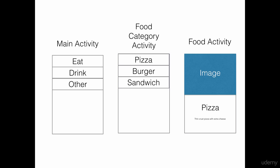When we click on the eat option, we will be redirected to a new activity which is also going to be a list activity called the food category activity. The food category activity is going to have three items: pizza, burger, and sandwich. When we click on either of these options, like the pizza option, it's going to redirect us to a new activity called the food activity, which is going to show us an image of that particular food item along with the item name and its description.